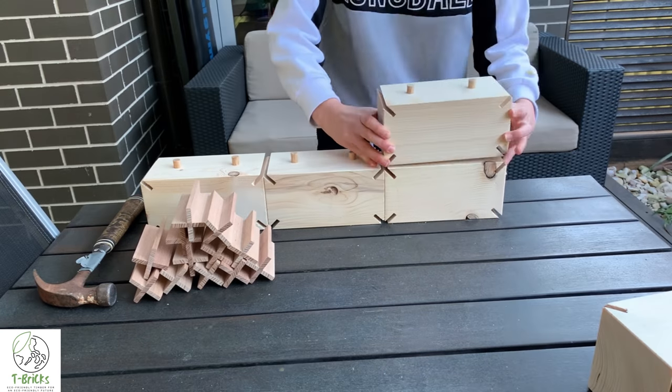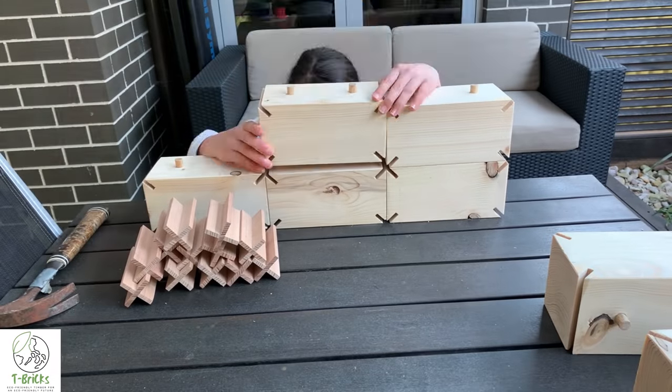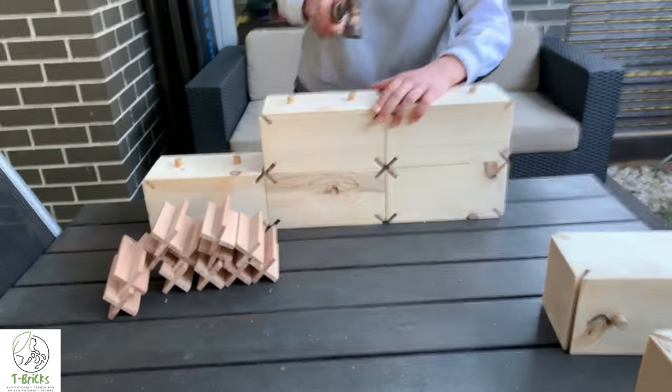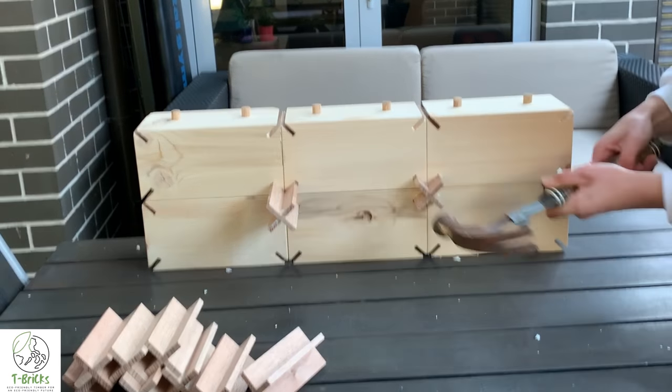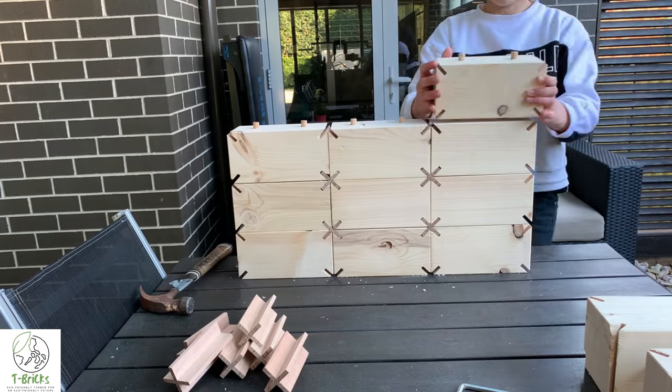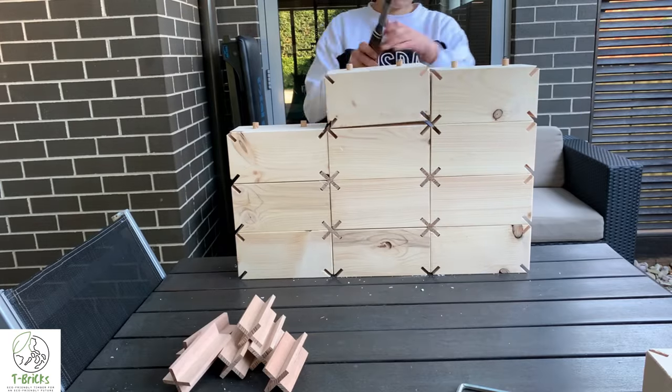To build a T-Brick structure, all you need to do is secure one layer of bricks onto the ground for stability, start putting the next layer up and then hammer the cross pieces into the hole between the bricks. You simply continue this process until you are finished with the structure.